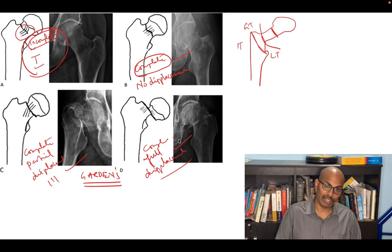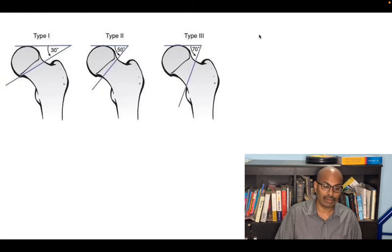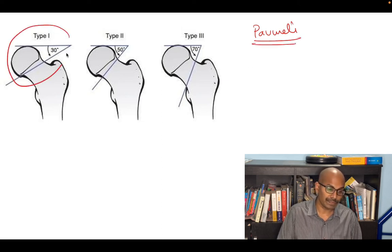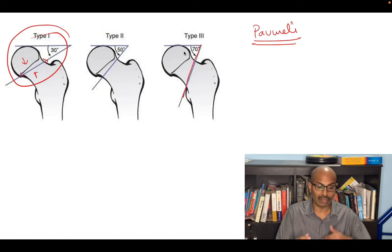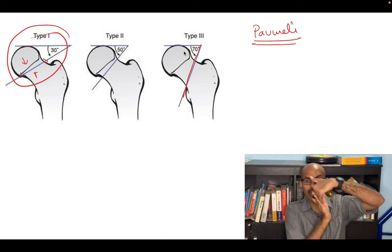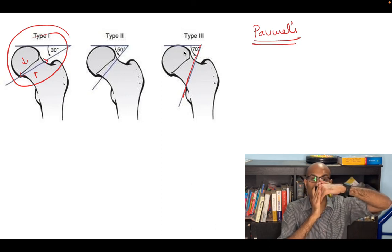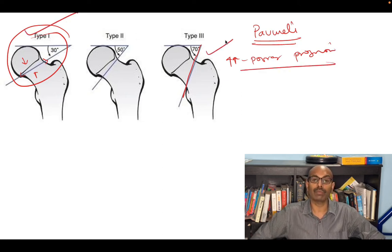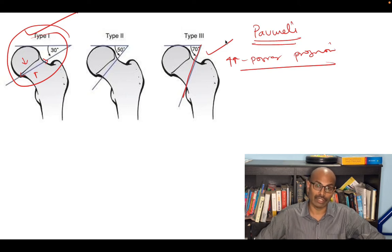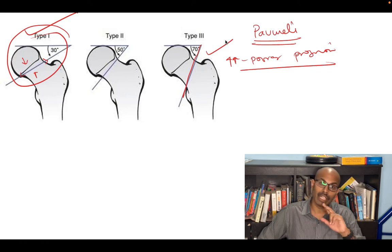The second classification is Pauwels' classification, based on the angle of the fracture. The more acute the angle, the better the prognosis, because there is compression at the fracture site allowing healing. As the angle becomes more vertical, there is shearing rather than compression, giving a poorer prognosis. Anything less than 30 degrees is good prognosis; anything more than 70 degrees has poor prognosis. So the two classification systems are Garden's and Pauwels'.